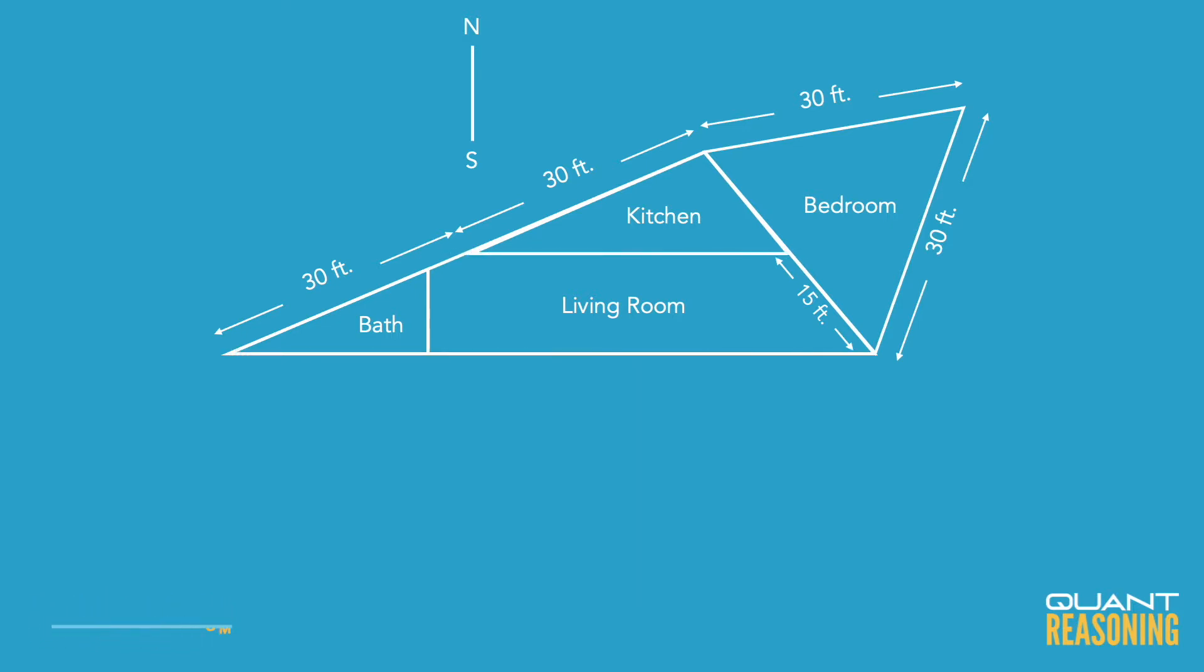We have two similar triangles here. We have that upper smaller triangle and then the bigger triangle that holds it. Those are similar triangles and we know this because, exactly because, those lines are parallel.